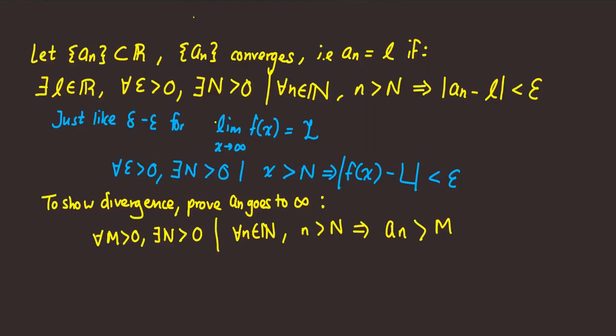For sequence convergence proofs we'll be using two definitions to prove convergence or divergence. For convergence we'll prove that for all epsilon greater than 0 there exists a capital N greater than 0 such that for all natural small n, if small n is greater than capital N, then |A_n - L| is less than epsilon. To prove divergence we show that for all M greater than 0 there exists N greater than 0 such that for all natural little n, if n is greater than N then A_n must be greater than capital M.